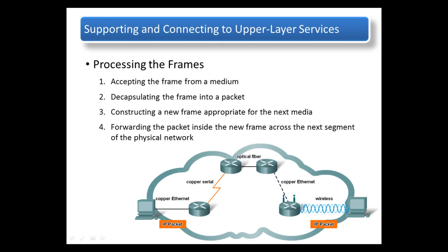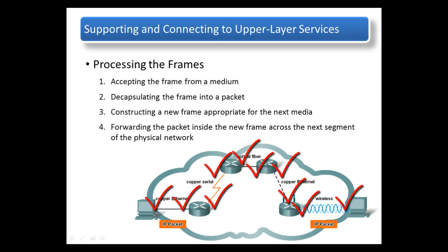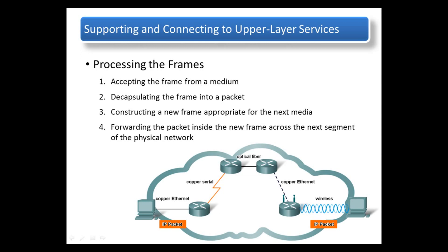At each hop, the received frame is also examined for errors. A frame checking sequence is calculated at each interface — at every point along the path, including routers connected by a crossover cable. Assuming all went well, the frame checking sequence would have been calculated a total of 10 times, once at each interface. If an error is found in a received frame, the frame is discarded immediately. If the frame is good, the data link layer directs the packet to an upper layer protocol to determine the next segment the new frame should travel on.